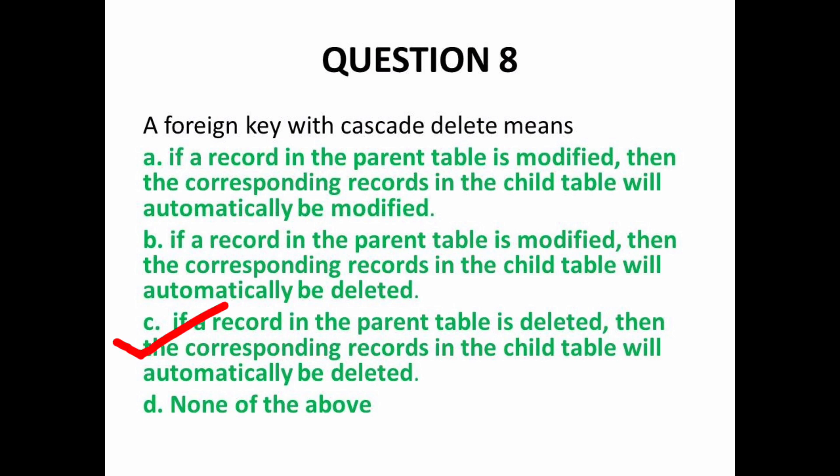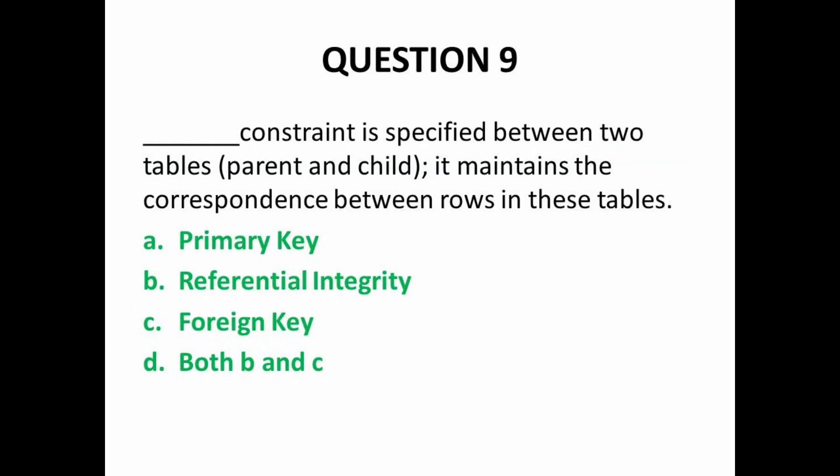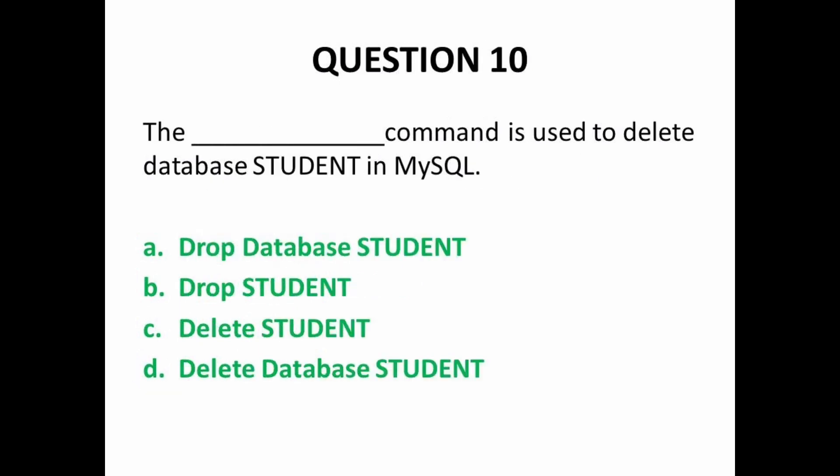Next MCQ: which constraint is specified between two tables — parent and child — and maintains the correspondence between rows in these tables? It is the referential integrity constraint. Option C says foreign key constraint, and we also call referential integrity constraint a foreign key constraint. So option D — both B and C — is the correct answer.